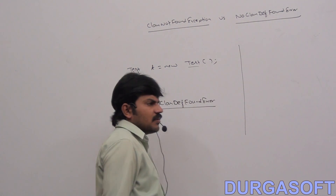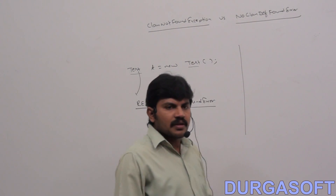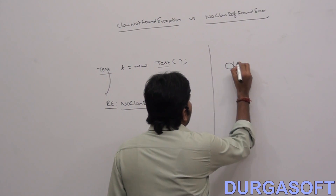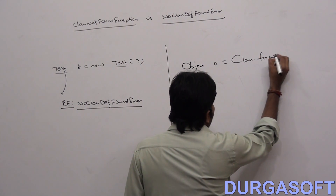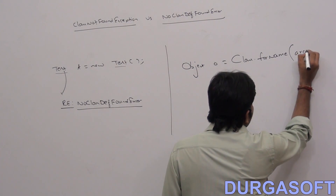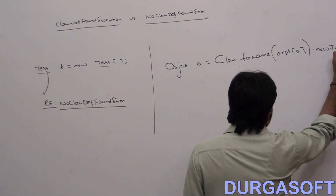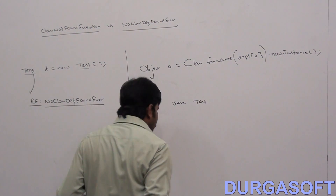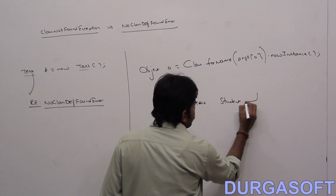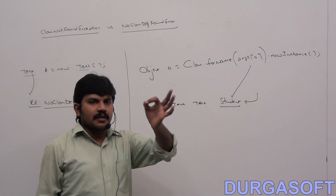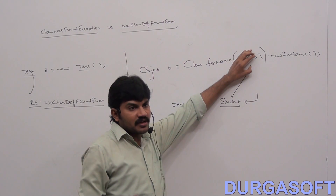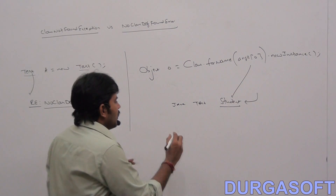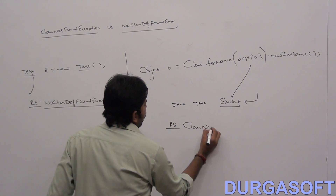Now suppose I didn't hard-code the class name — I will provide it dynamically at runtime. For example: Object o = Class.forName(args[0]).newInstance(). Here args[0] is 'Student', provided at runtime. For dynamically provided class names, at runtime, if the corresponding .class file is not available, then we will get a runtime exception saying ClassNotFoundException.